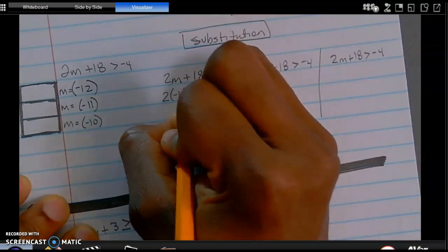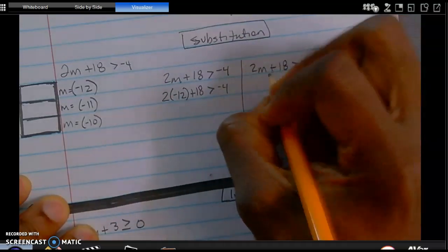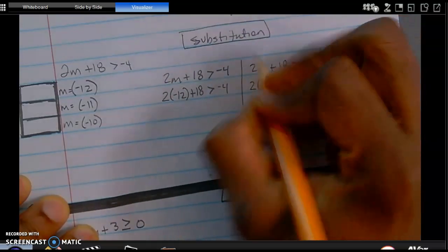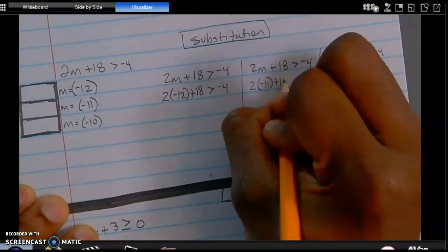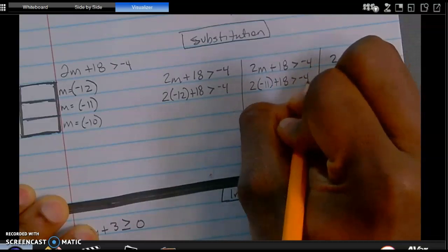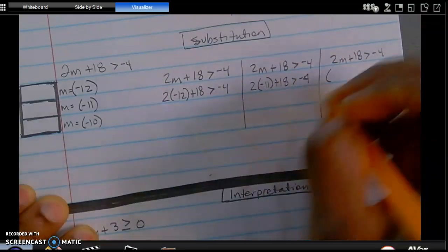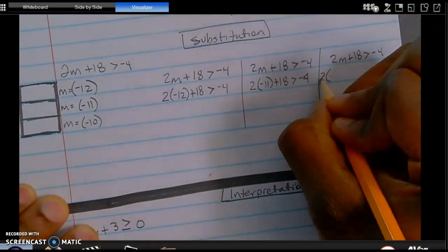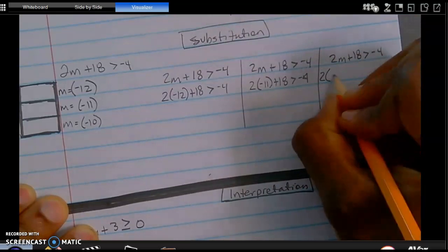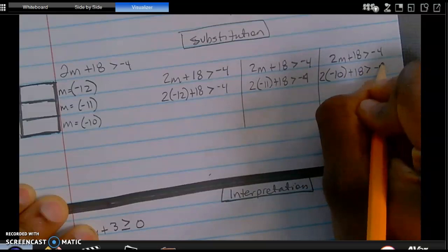So in this case, 2 times negative 12 plus 18 is greater than negative 4. 2 times negative 11 plus 18 is greater than negative 4. And for this last one, 2 times negative 10 plus 18 is greater than negative 4.